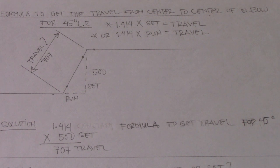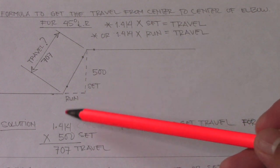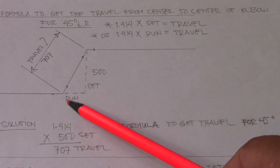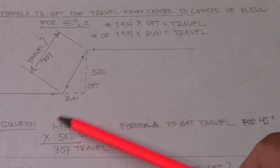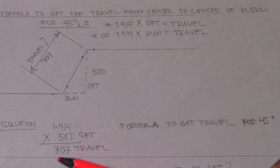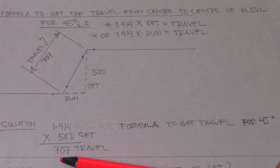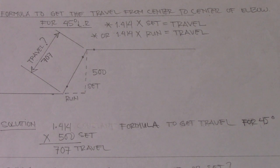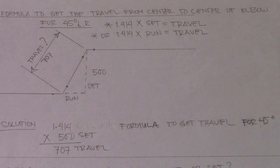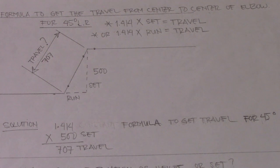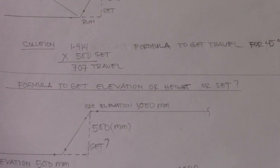This formula is for 45 degrees only. If we have a given run of 500, we also multiply it by 1.414 to get the travel, which gives us 707. So this is example number one using 1.414.